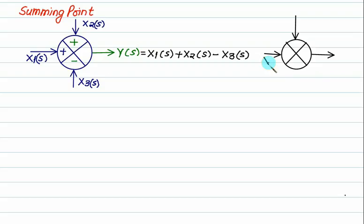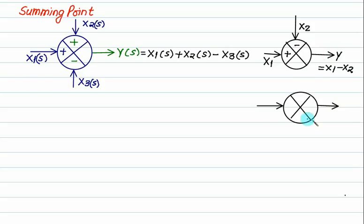This summing point has inputs x1 and x2. If x2 is plus and one is minus, the result y equals x1 plus or minus x2, so it has minimum two inputs and one output. Now if the summing point has only one input, say x, with a plus sign, then y equals x. So for a single input, a summing point is meaningless.